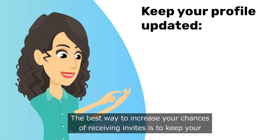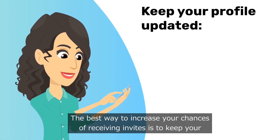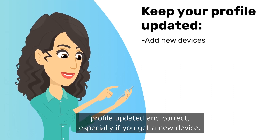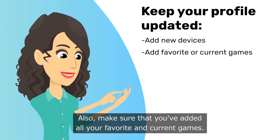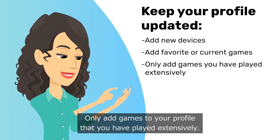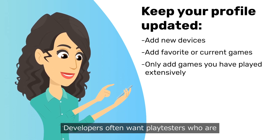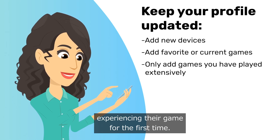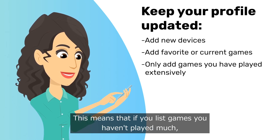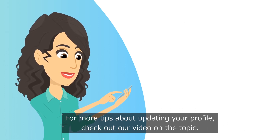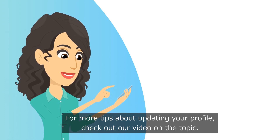The best way to increase your chances of receiving invites is to keep your profile updated and correct, especially if you get a new device. Also make sure that you've added all your favourite and current games. Only add games to your profile that you have played extensively. Developers often want playtesters who are experiencing their game for the first time, so if you list games you haven't played much you could be excluding yourself from playtests you're actually relevant for. For more tips about updating your profile check out our video on the topic.